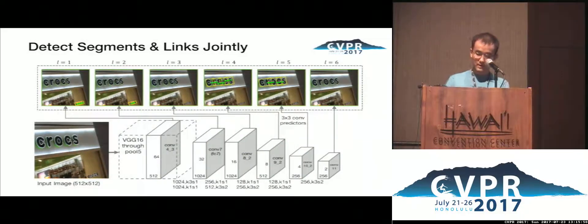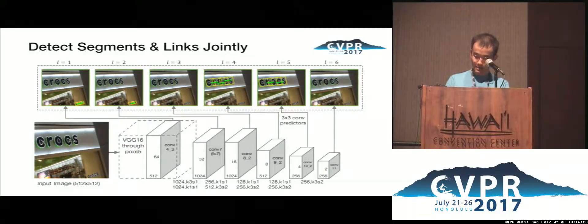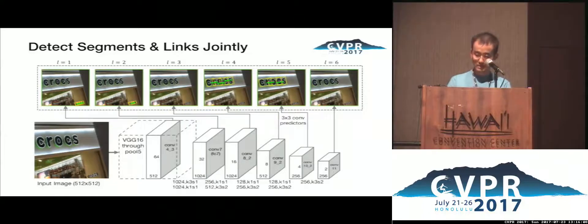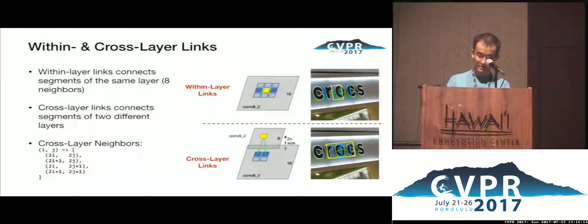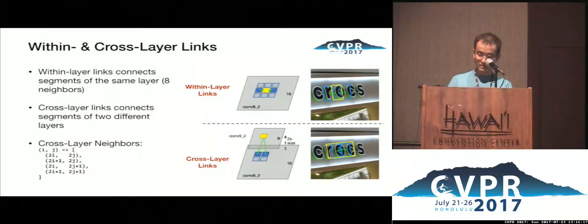We detect segments and links jointly using a fully convolutional neural network. The model is derived from VGG16. Convolutional predictors are added to six of the feature layers. They produce segments and links at different scales. The links we just mentioned are called within-layer links, as they connect segments of the same layer.